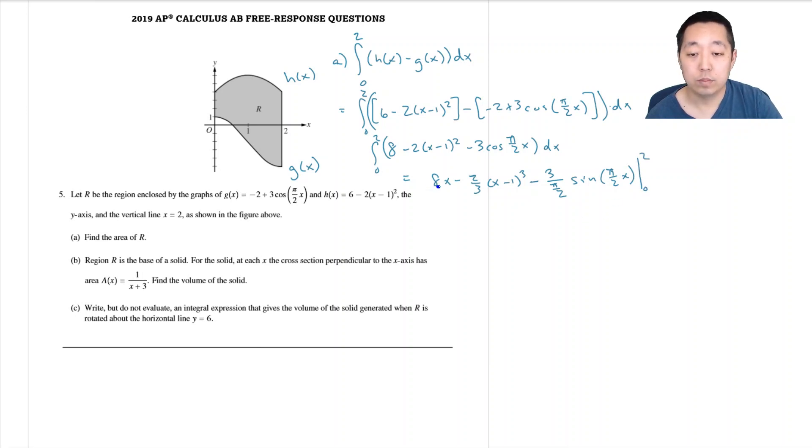Now, let's do each one at a time. 2 minus 0 is going to be 2, so it's going to be 8 times 2, that's going to be 16 minus 2 thirds. 2 minus 1 is 1, 1 cubed minus negative 1 cubed.